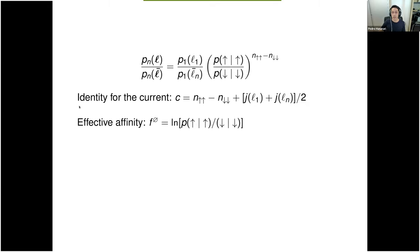Now I use the identity for the current, that current C equals number of up, up minus number of down, down, plus this boundary condition. If it's raising eyebrows, maybe we can save it for the questions. And also I use the definition of effective affinity here. So this is defined as the effective affinity. I will refer to some papers for that soon.